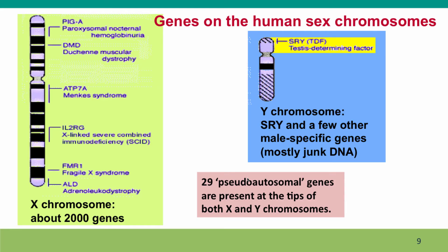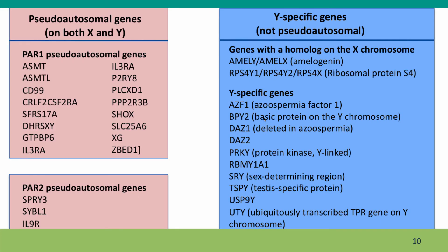What are these genes that are at the tips of the chromosomes? Here are diagrams of the X and Y chromosomes. At the tips — and estimates vary — there are about 29 pseudo-autosomal genes that are present at the tips of both the X and Y. Those genes are listed here. At one end of the X and the Y there's a fairly large cluster of genes; at the other end there are only about three genes that are known. These are the genes that are genuinely pseudo-autosomal — alleles are present on both the X and the Y, and alleles move back and forth because of the obligate crossovers.